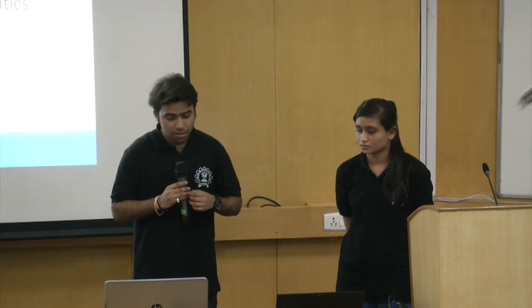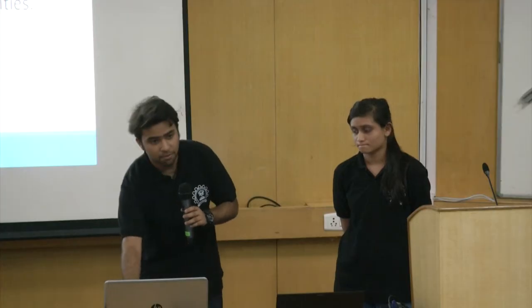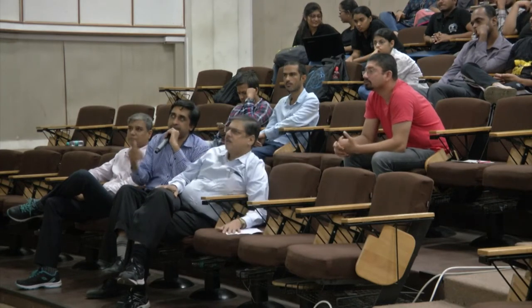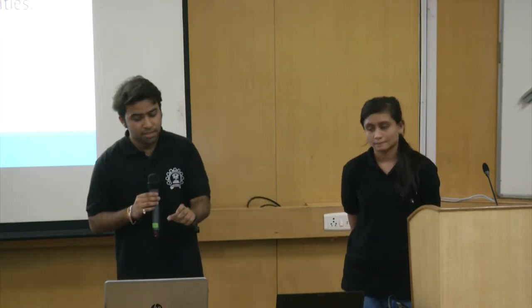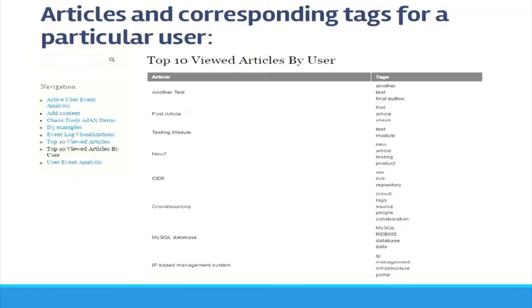Examiner: Top 10 will be available in some form. Team: We can make it configurable for N articles. We are also providing APIs so that other projects can fetch the data in the desired format. These are the top 10 viewed articles by a particular user — the left side shows the article name and the right side shows the corresponding tags.